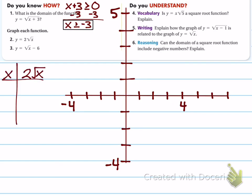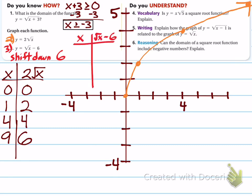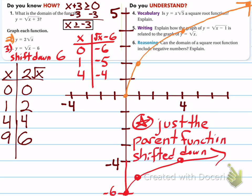Number 2: graph the function 2 times the square root of x. Plug in 0: radical 0 times 2 is 0. Plug in 1: radical 1 is 1 times 2 is 2. Plug in 4: square root of 4 is 2 times 2 is 4. Plug in 9: square root of 9 is 3 times 2 is 6. Plot those points and there's your function. Number 3: graph radical x minus 6. Just remember it is the parent function shifted down 6 units. Plug in 0: get negative 6. Plug in 1: get negative 5. Plug in 4: 2 minus 6 is negative 4. Plot those points — it is just the parent function shifted down 6 units.